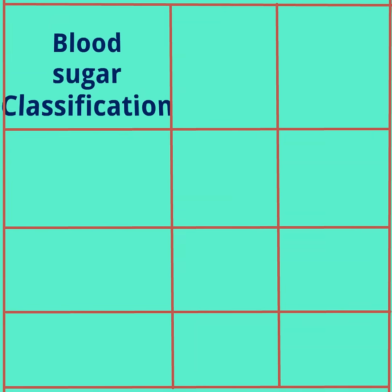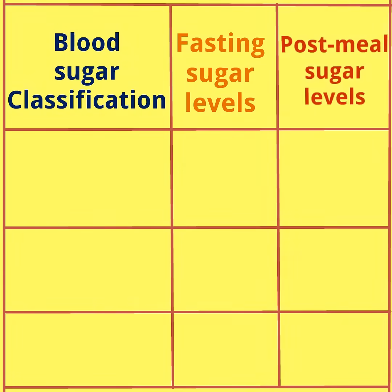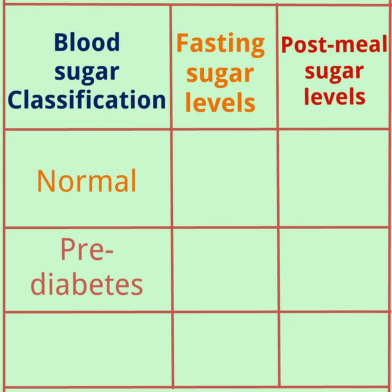Hey viewers, we are going to see blood sugar classification — fasting blood sugar levels and post-meal blood sugar levels. There are three types: normal, pre-diabetes, and diabetes.